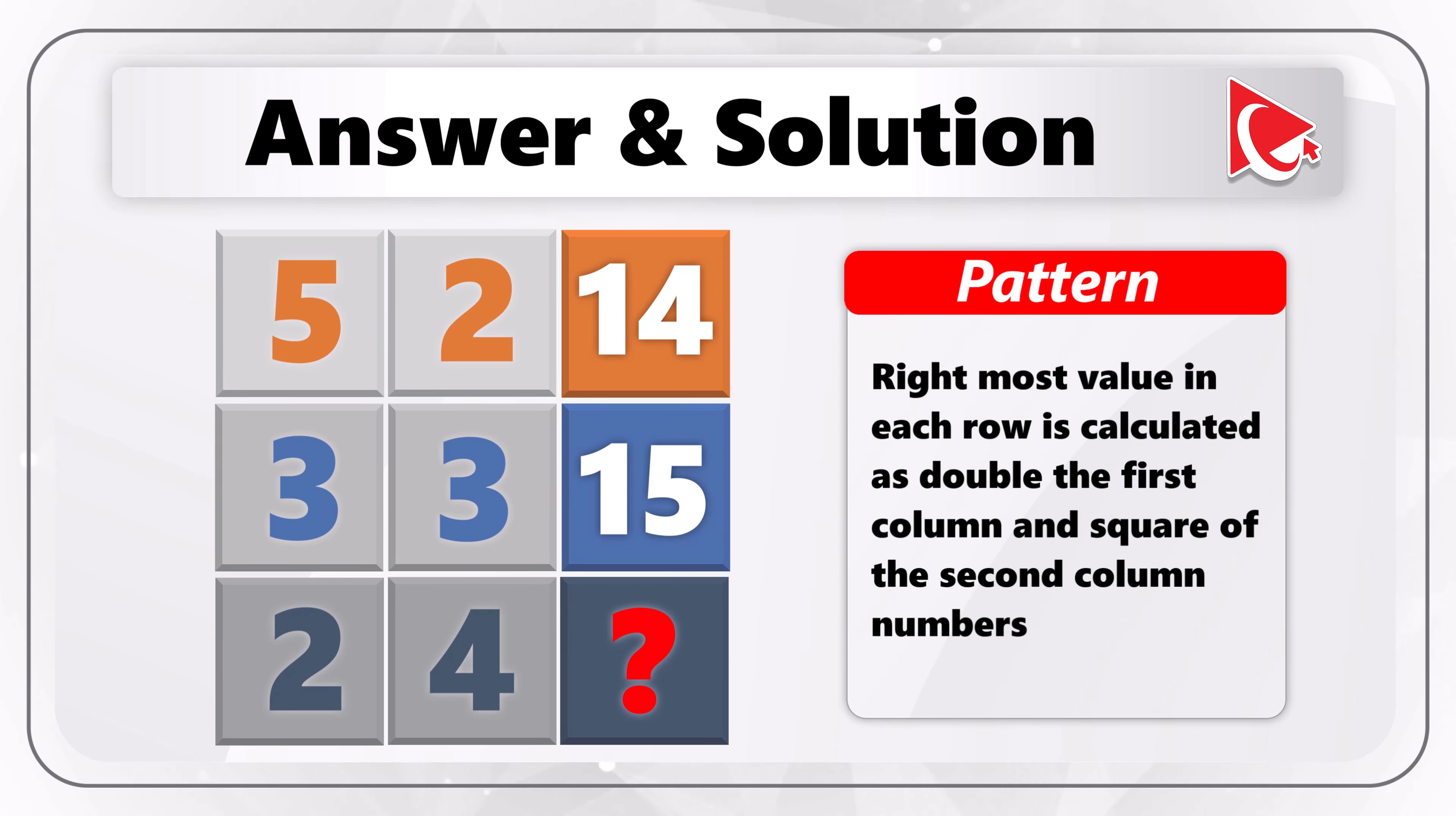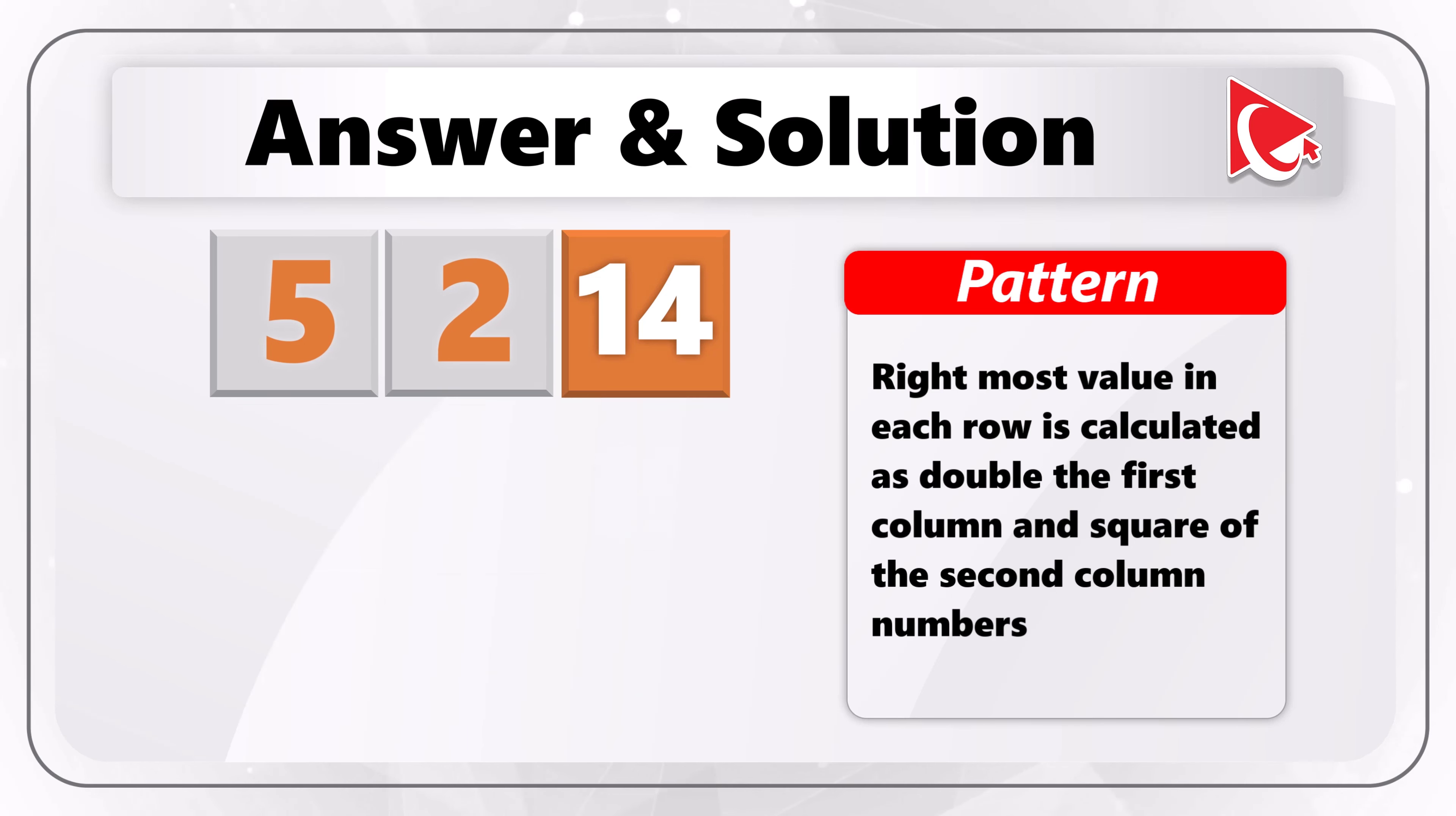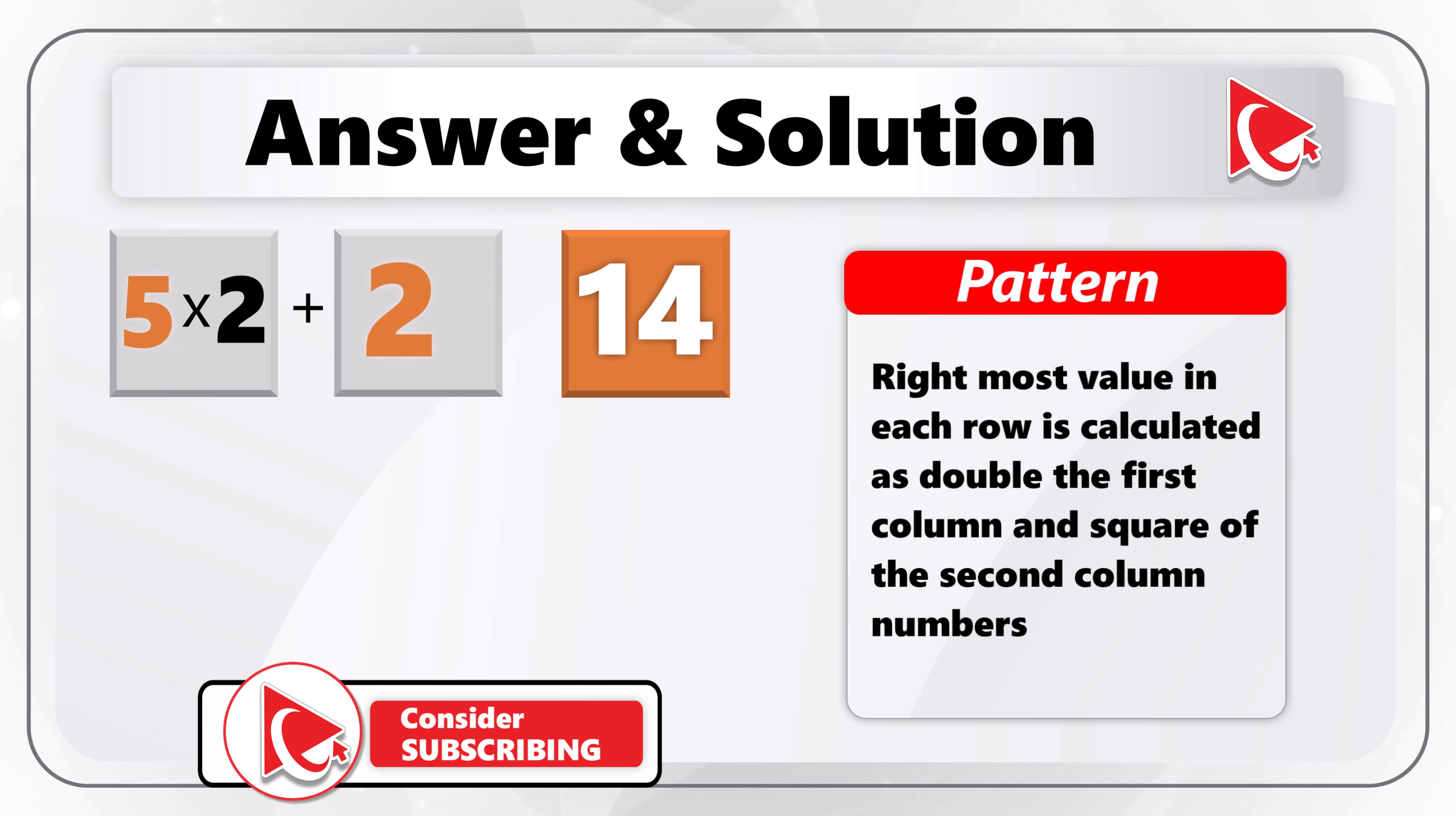I think the pattern here is that the rightmost value in each row is calculated as double of the first column's value plus the square of the second column numbers. Let's look at the example. For example, for the first row, the calculations might be 5 multiplied by 2 plus 2 squared, which would equal 10 plus 4, and the end result of this would be 14.